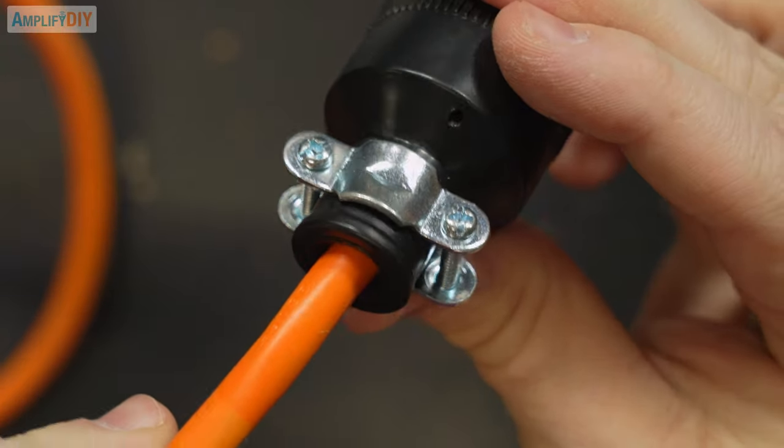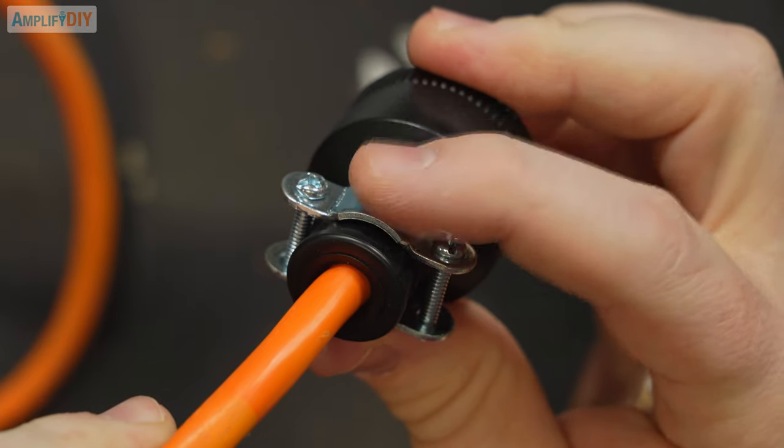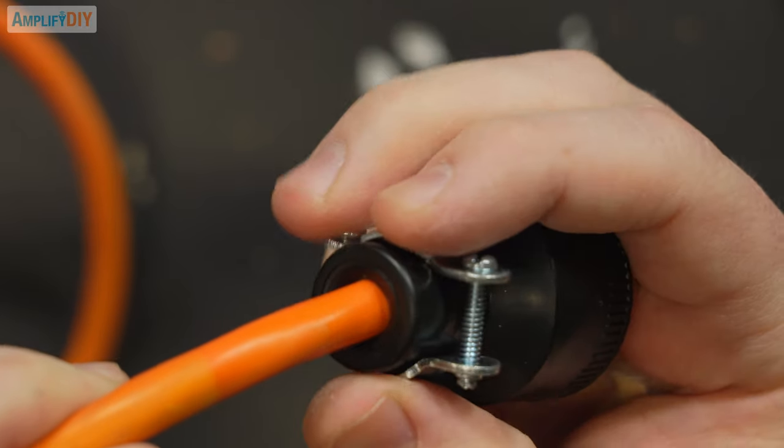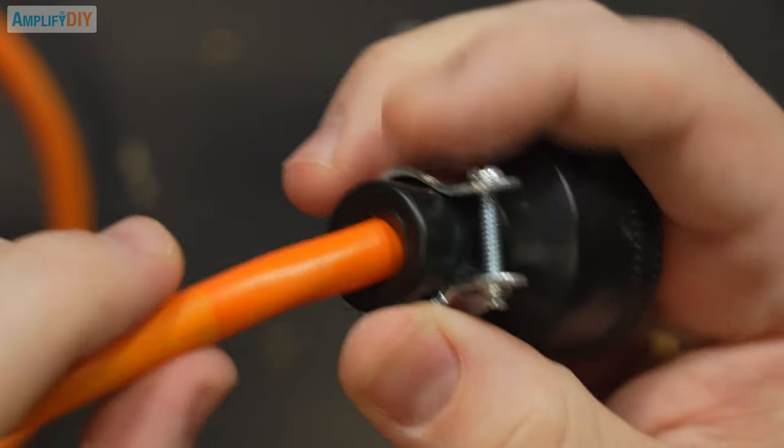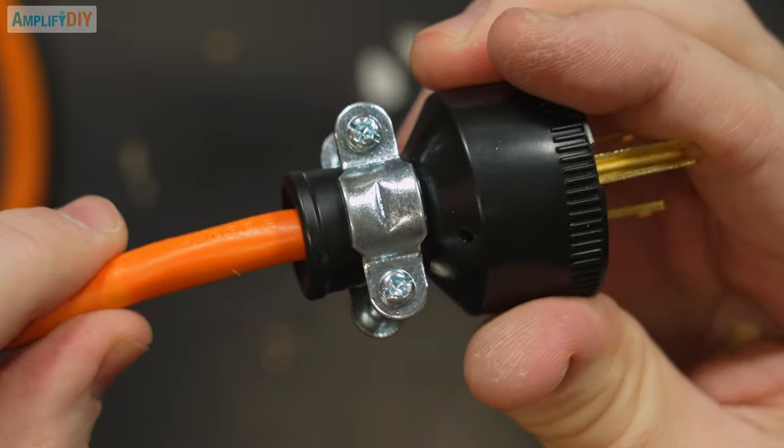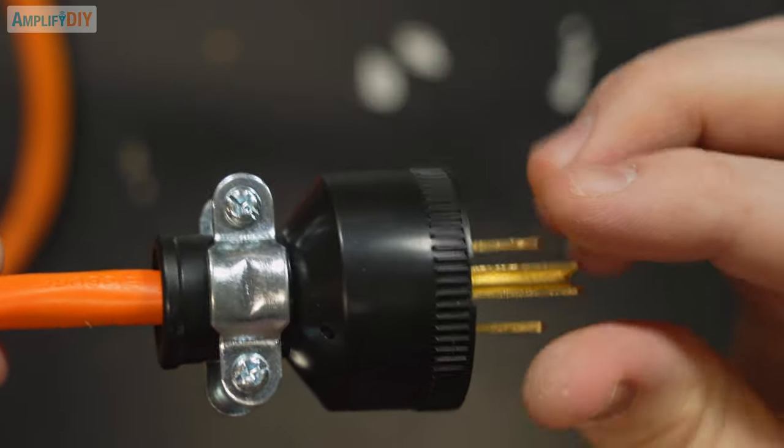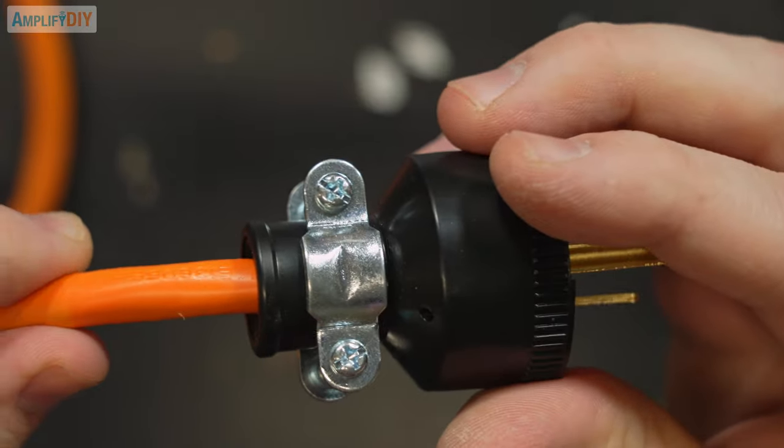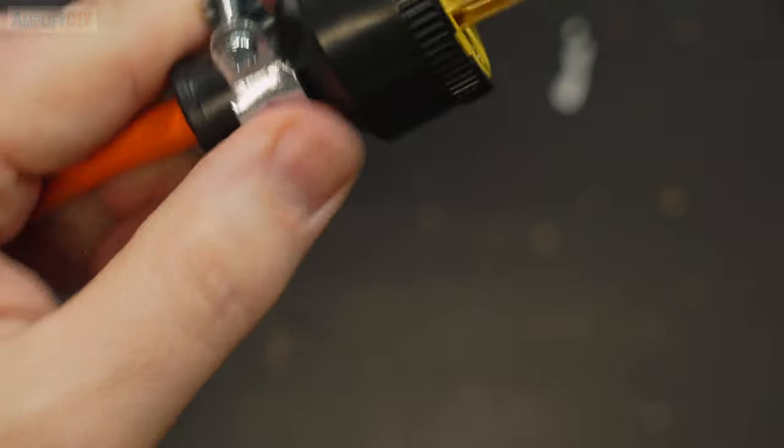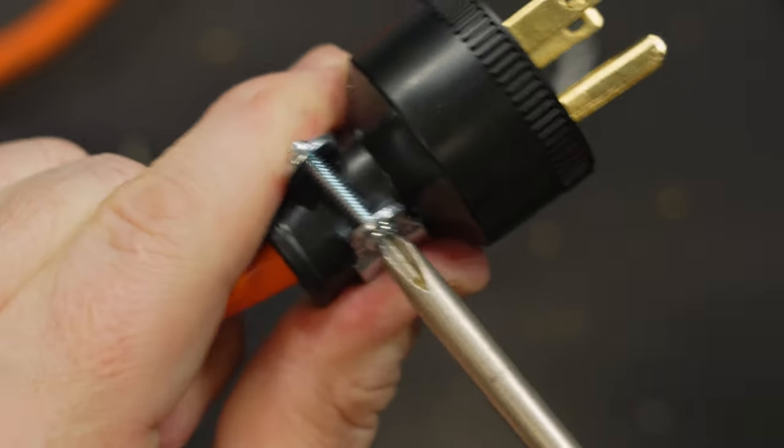And the last step is really important don't forget to do this. This silver piece here is designed to clamp onto the outer insulation layer of this cord. This is going to provide strain relief so that if you pull on the cord you're not actually pulling on those connections inside. So again just using a phillips screwdriver you'll tighten these down.